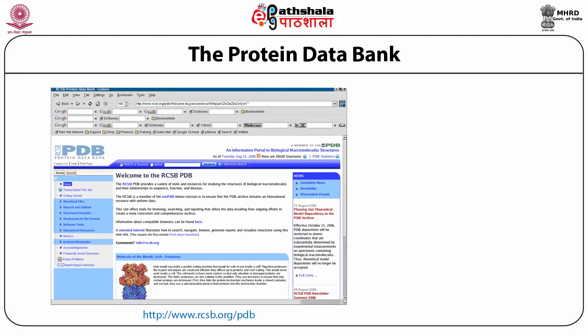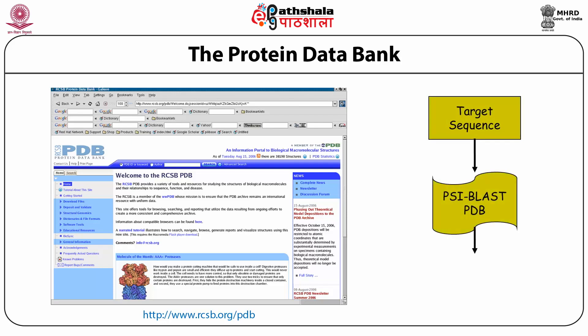Where do we find template structures? The Protein Data Bank (PDB) is a repository for experimentally determined protein structures and gives us the best source. We take our target sequence and run a search on the sequences of structures stored in the PDB — one could use PSI-BLAST to do so. Hopefully you get one or more template proteins whose structures are well determined and whose sequences are not very different from your target sequence.